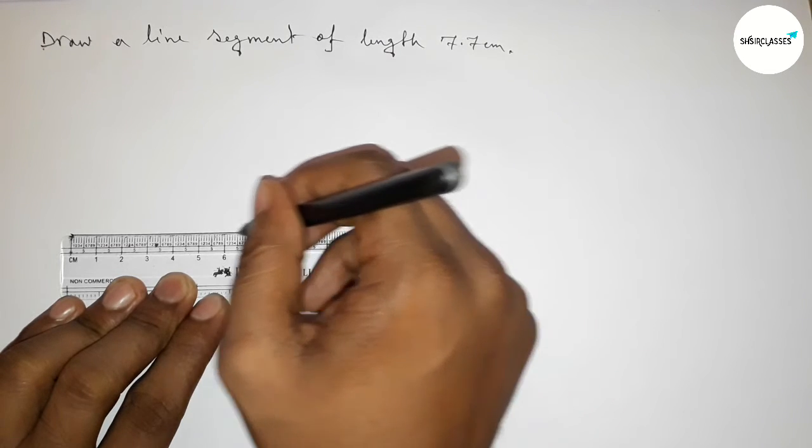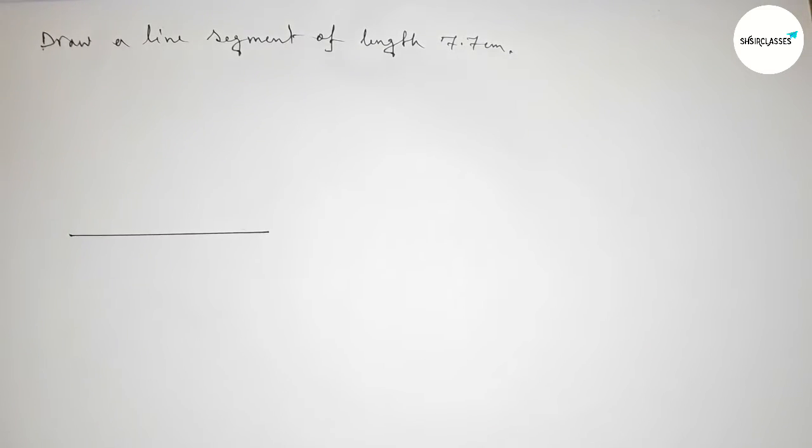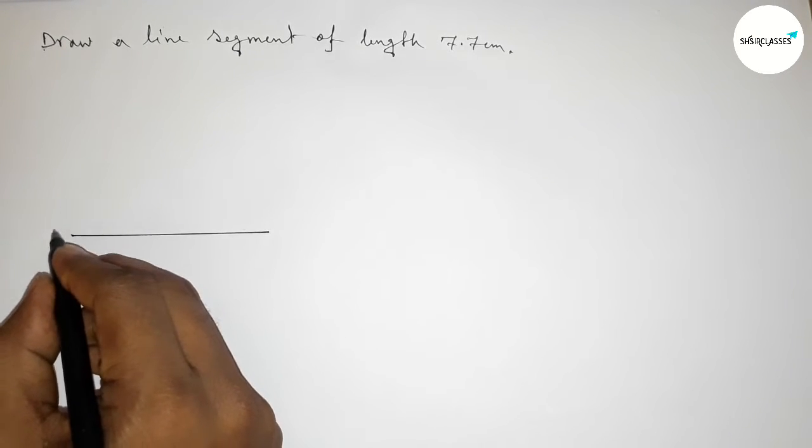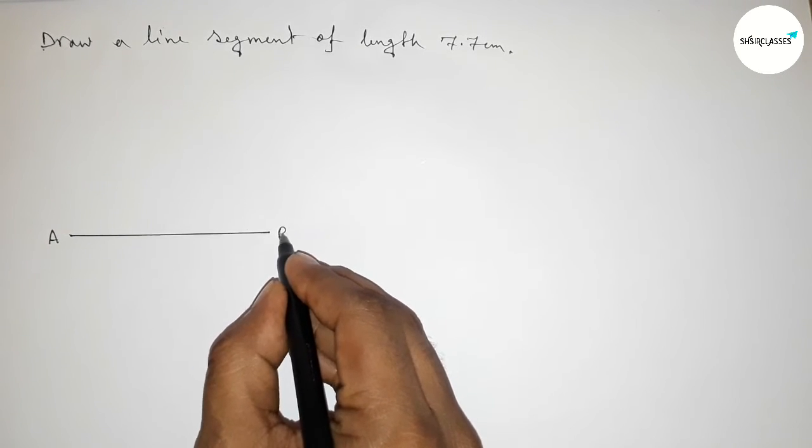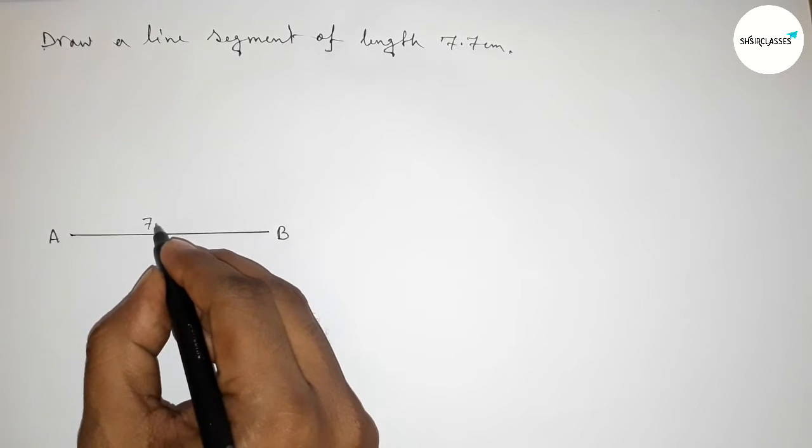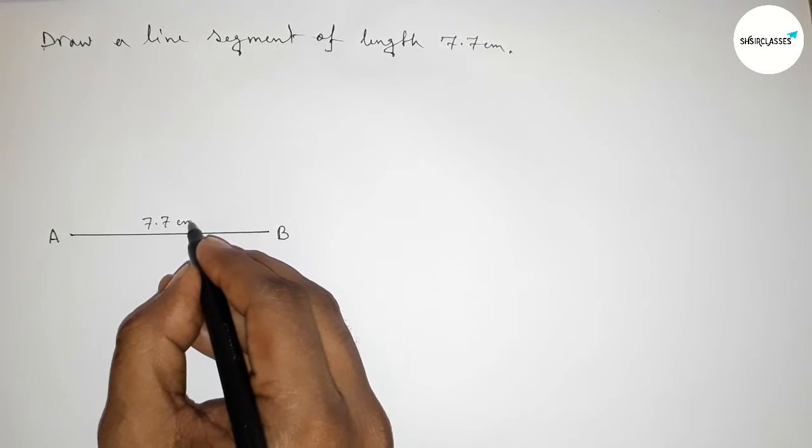Next, taking here point A and here B. So AB is a line segment of length 7.7 centimeters.